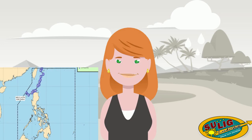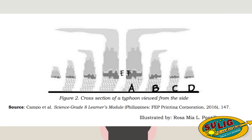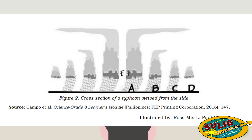Let's now assess what you have learned in this module. Refer to the figures shown and answer questions 1 to 3. Question number 1: Which location has the highest air pressure? The answer is Location D. Question number 2: Which location is the eyewall? The answer is Location F. Finally, question number 3: Which location has a calm condition? The correct answer is Location E. Did you get all the correct answers? Well done!